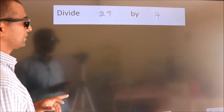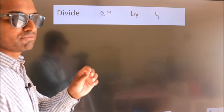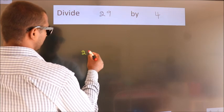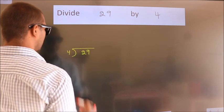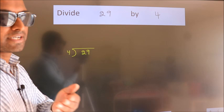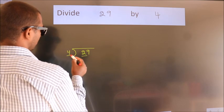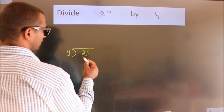Divide 29 by 4. To do this division, we should frame it in this way: 29 here, 4 here. This is your step 1. Next, here we have 2, here 4. 2 is smaller than 4, so we should take two numbers.